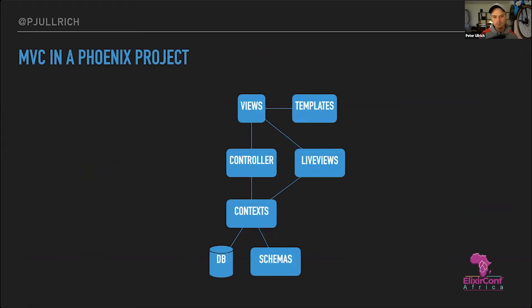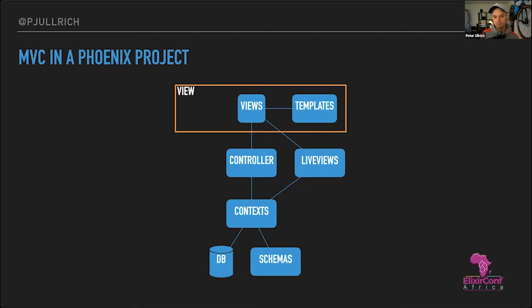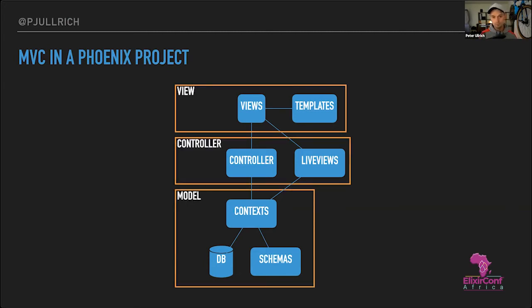The first pattern — which you use every day if you write Elixir with Phoenix — is Model-View-Controller. It's quite simple and easy to understand. When you start a new Phoenix project, Elixir will generate groups for you: views and templates, controllers or LiveViews, and at the bottom, contexts, Ecto schemas, and your database. If you think about these as layers, you have the view layer, the controller layer, and the model layer — that's basically the MVC pattern.